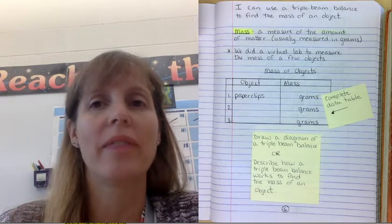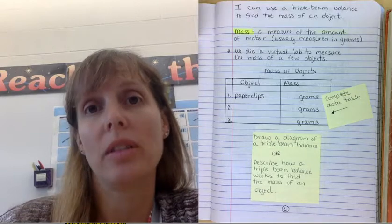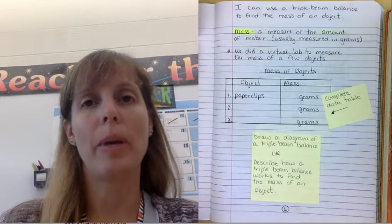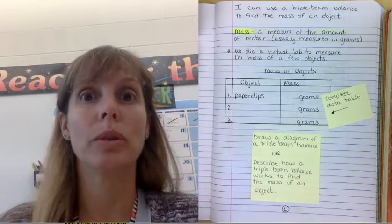This is about using a triple beam balance. In science, we need to find the mass of objects quite often so that we know how much space they take up, and we need to use numbers to do that. So in order to do numbers, we have to use some kind of tool for measurement.